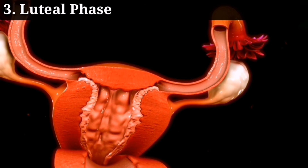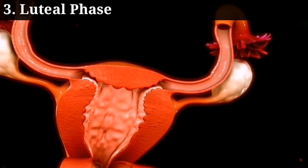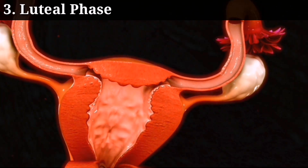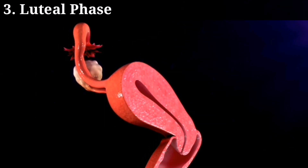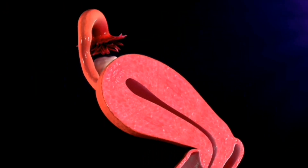The luteal phase is the third stage and lasts for around 14 days. During this phase, the ovaries produce progesterone, which helps to maintain the lining of the uterus in preparation for pregnancy.